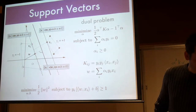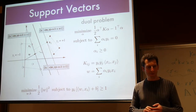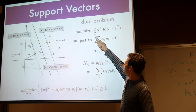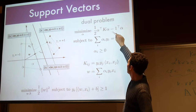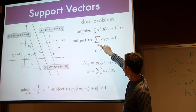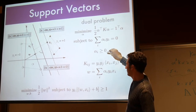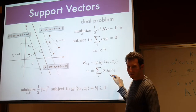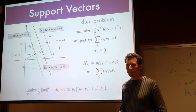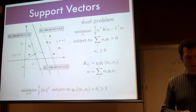For SVMs: we have the support vector classification problem where the margin is 2/‖w‖, and we minimize the inverse margin squared subject to y_i(w·x_i + b) ≥ 1. The dual problem minimizes ½α^T K α − Σα_i subject to Σα_i y_i = 0 and α_i ≥ 0, where K is the kernel matrix.